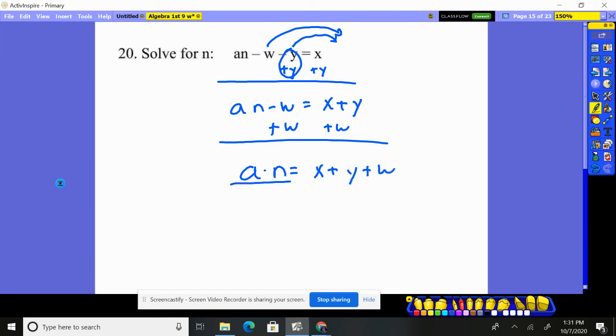And the final step, let's get rid of multiplying by a, divide by a. And there's our answer. We can clean it up with x plus y plus w, all divided by a. There's 11 through 20.